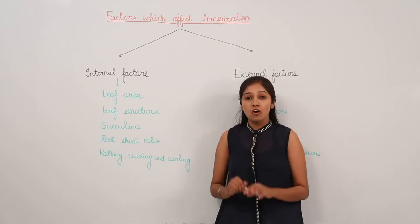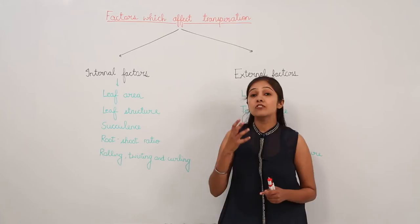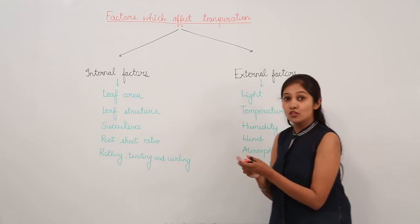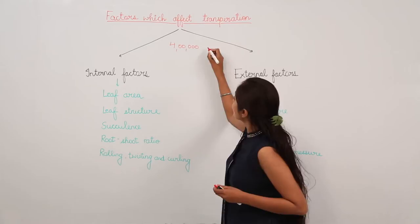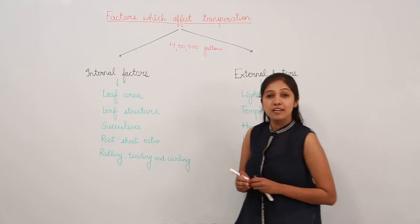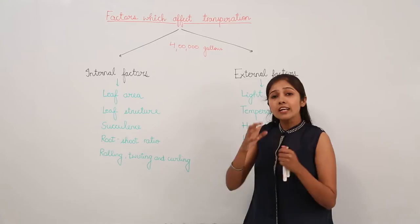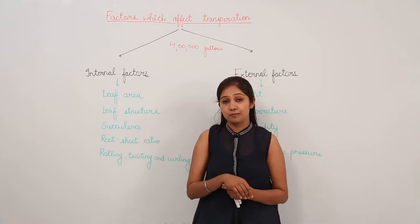Before I start, let us discuss an amazing fact. If you plant corn in one acre of land, can you imagine how much water will be transpired in one growing season? It is so amazing that if we plant corn in one acre of land, it is going to lose approximately four lakh gallons of water in the form of vapors. So how is this rate of transpiration achieved? What are the factors that affect the speed of transpiration?